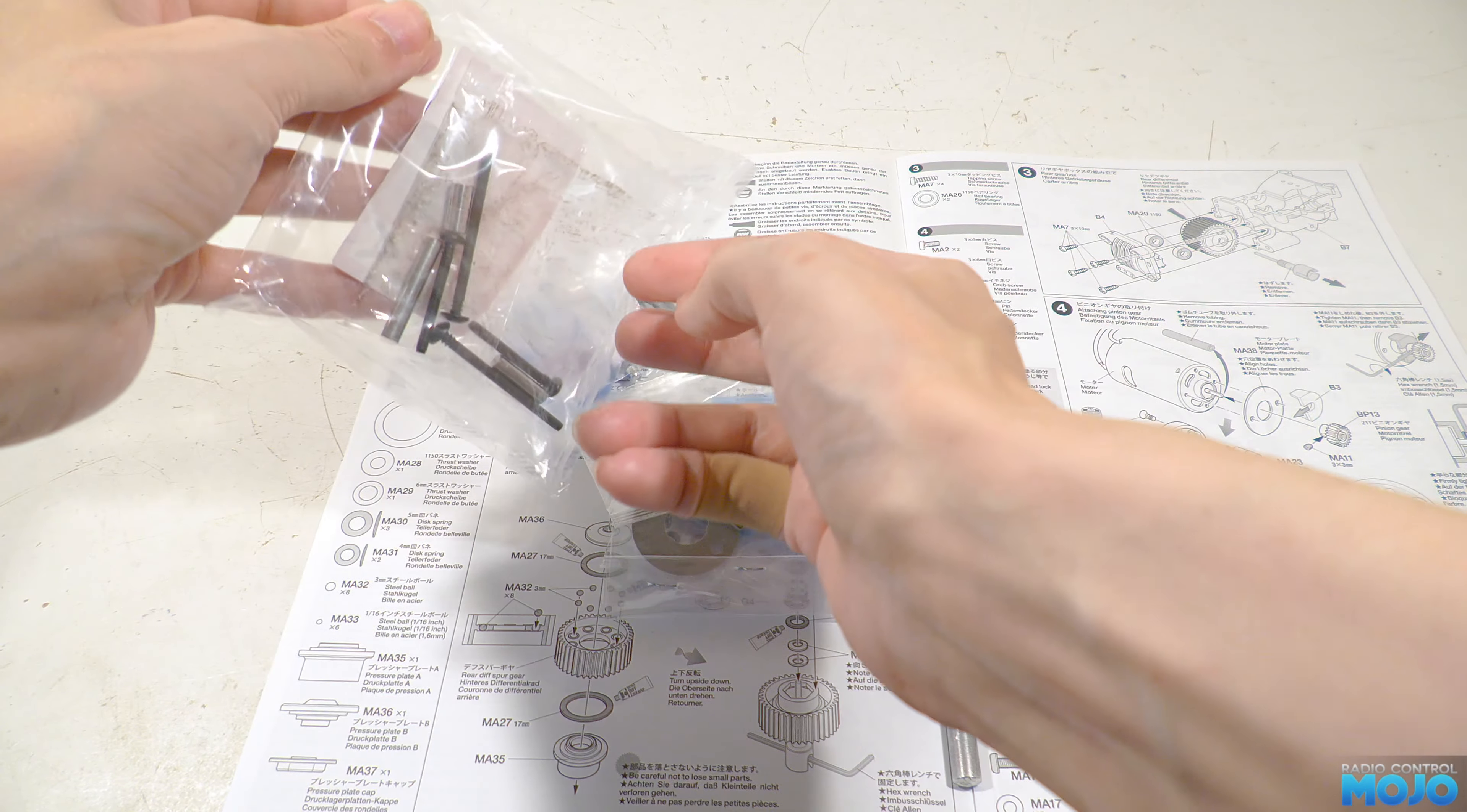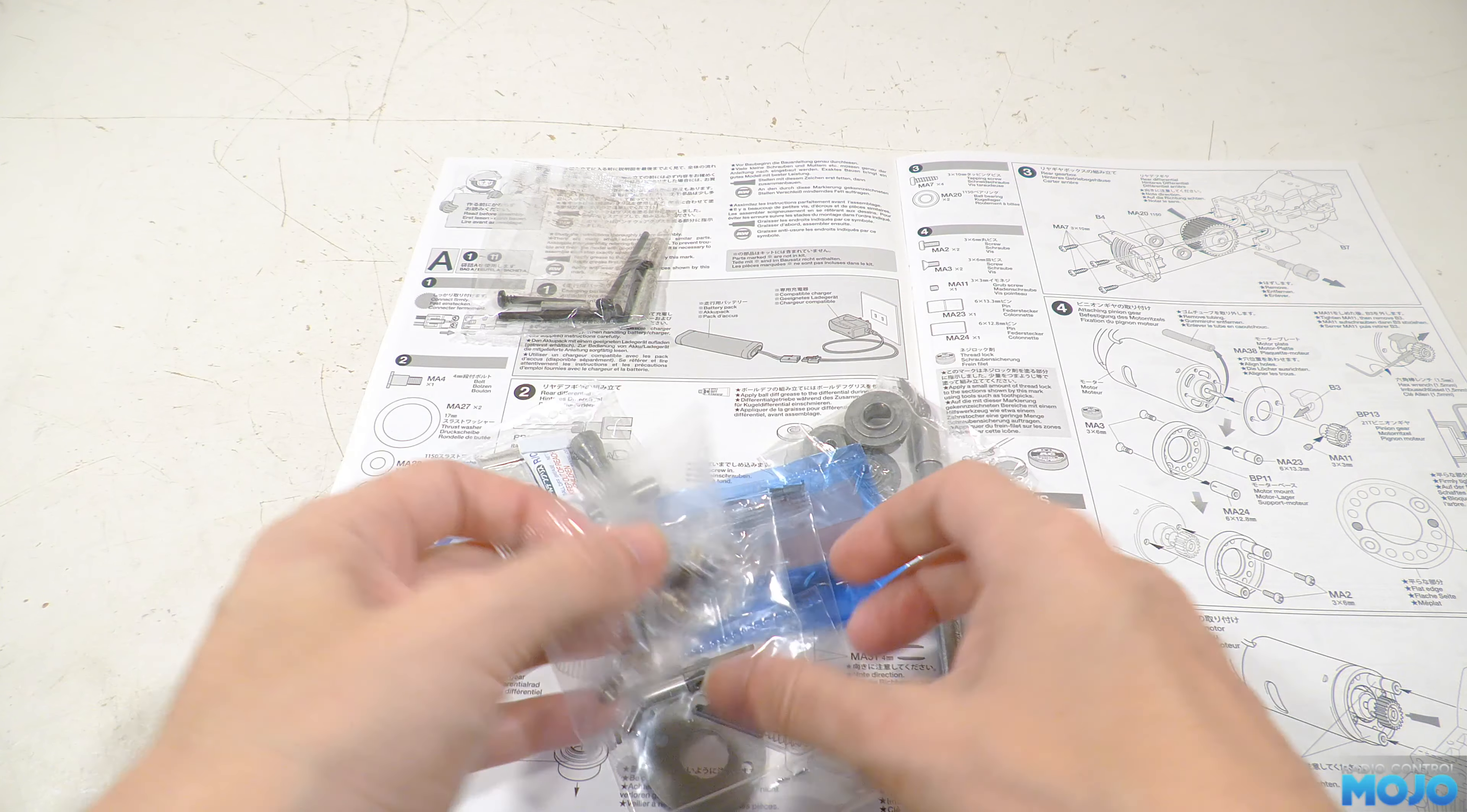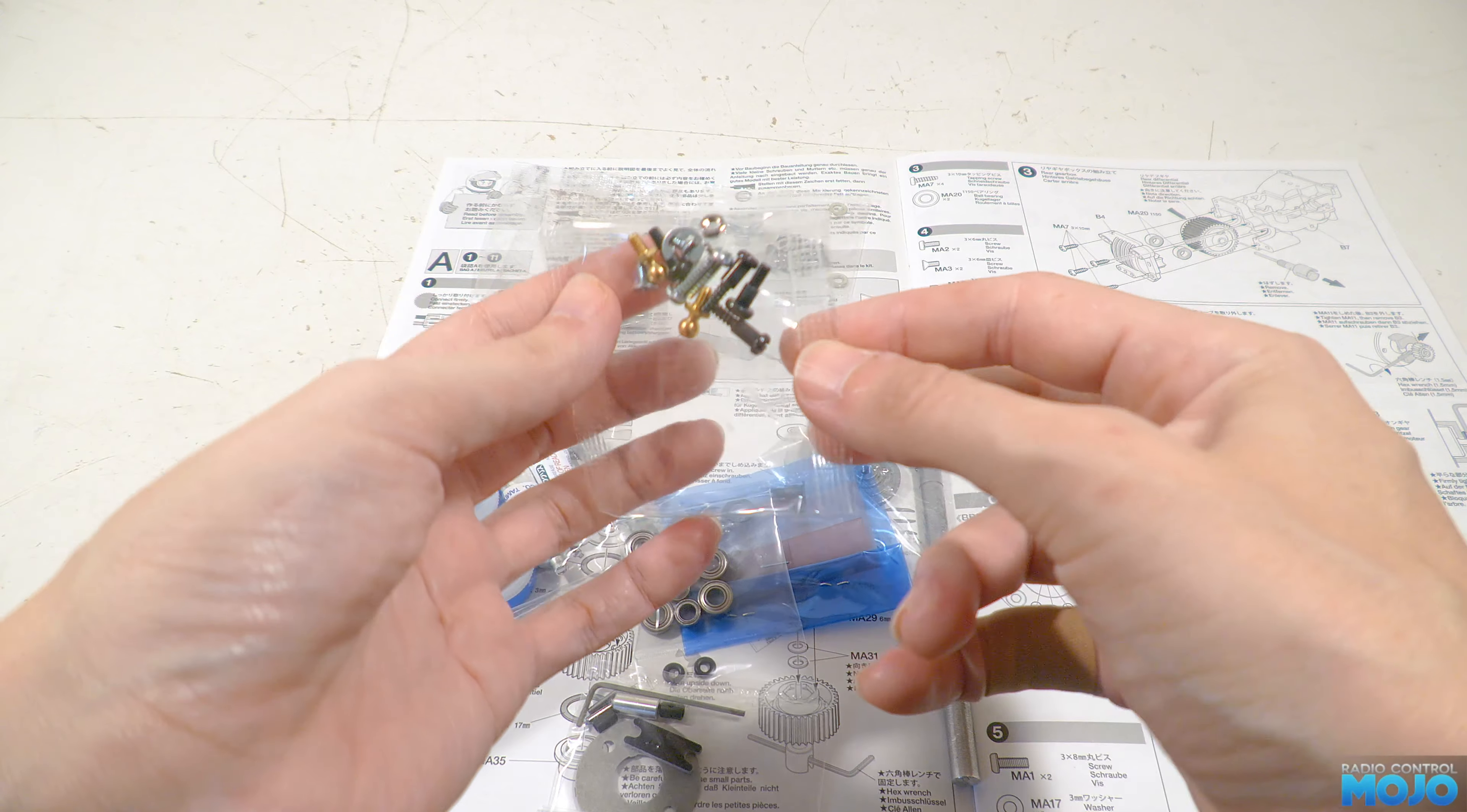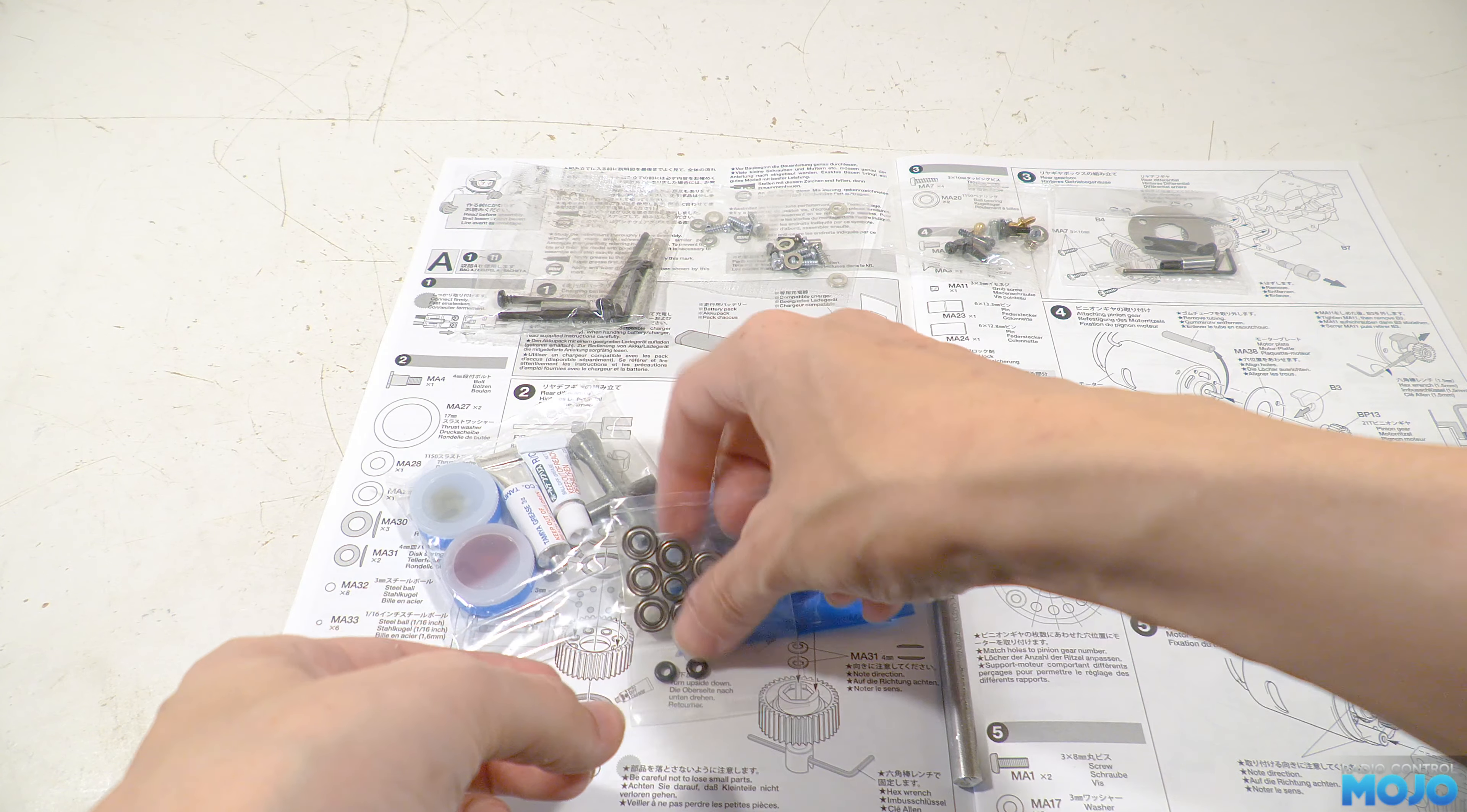Inside bag A we have some screw pins for the suspension arms. There's also a couple of bags with some various small fixings, washers and other bits. Then we have the small allen key, the fibre motor plate and parts for the CVDs for the axles.